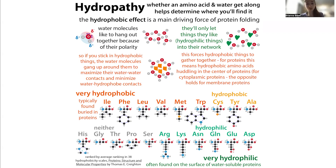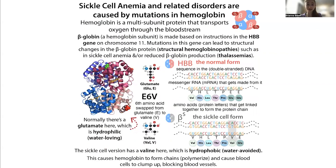Like all soluble proteins, it tends to have its hydrophobic parts on the inside and its hydrophilic or water-loving parts on the outside. So on the outside of a protein, you'll typically have those polar amino acids — things that are partially charged or even things that are fully charged.